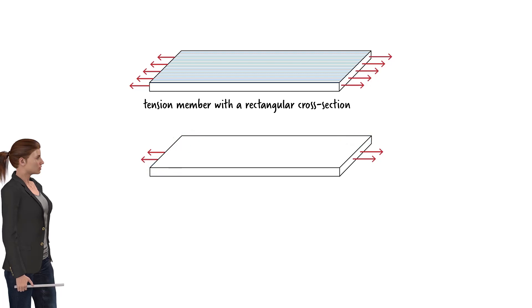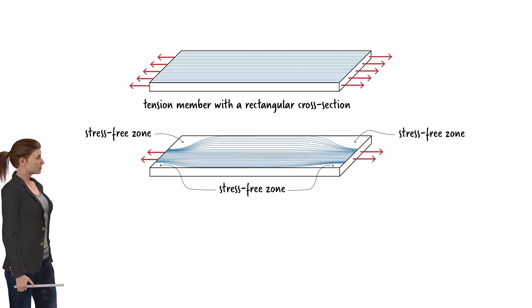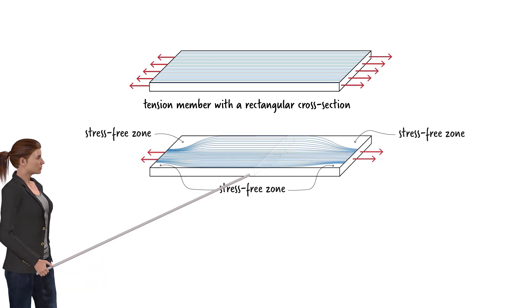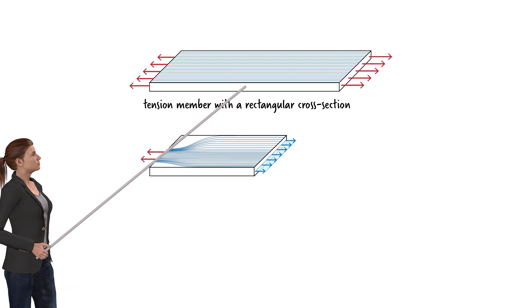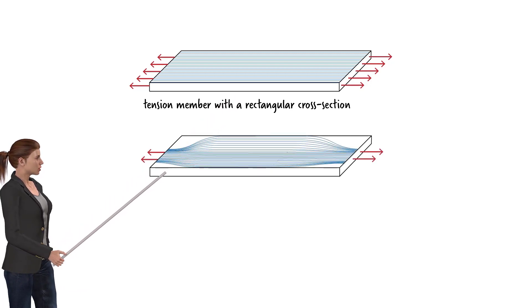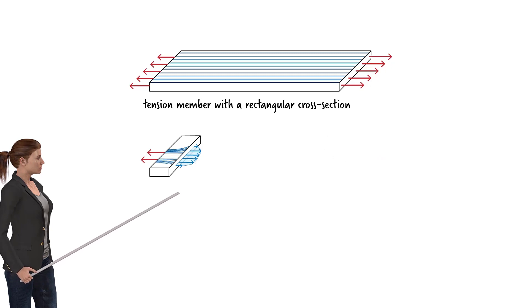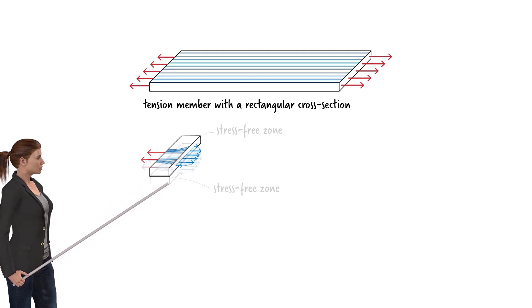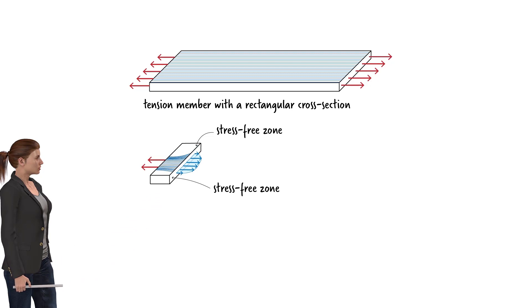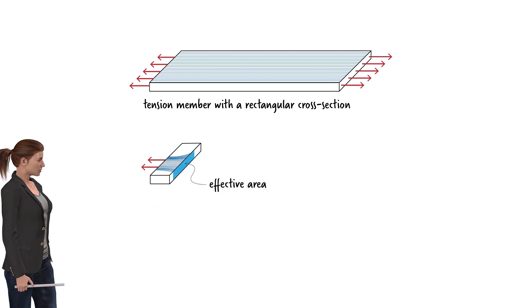Put differently, the axial stress flows inward from the loaded regions and spreads to the side edges of the plate, like this. If we cut the member near its midpoint, where the stress flows through the entire cross-section, we get a uniform stress distribution. However, in the region near the connection, the axial stress is not distributed over the entire cross-section — the stress is concentrated in the middle part. The ends of the section carry no axial stress, since they fall in the stress-free zones. Clearly, the effective cross-sectional area here is smaller than the gross cross-sectional area of the member.